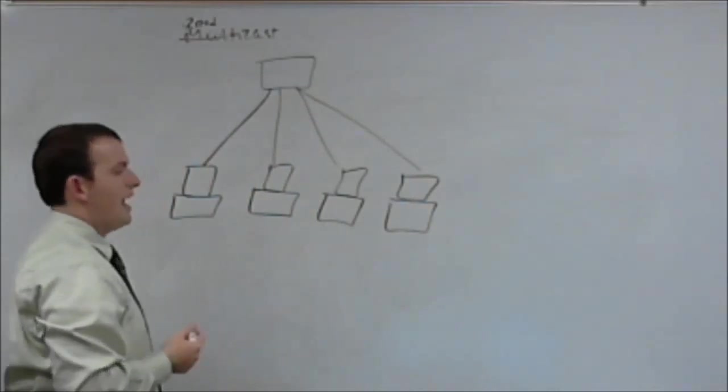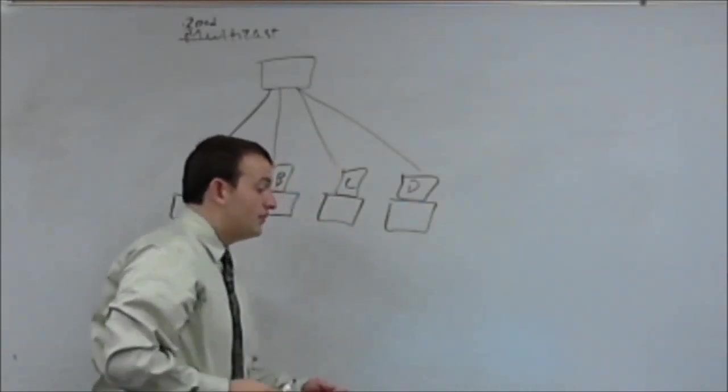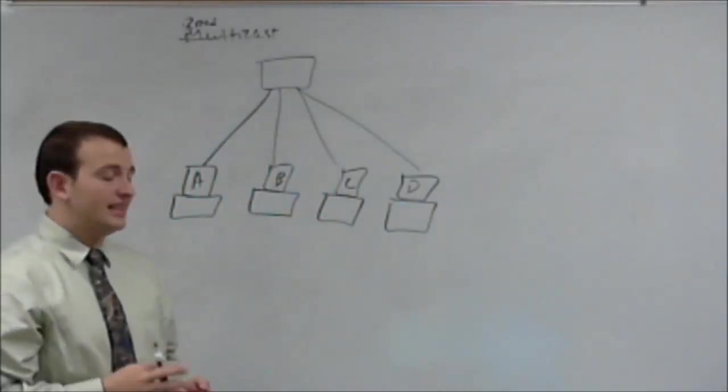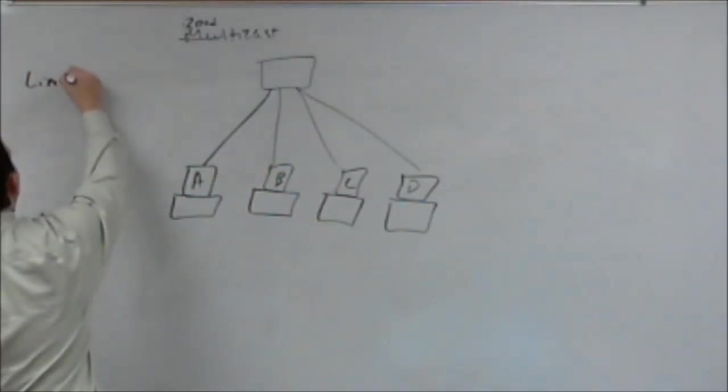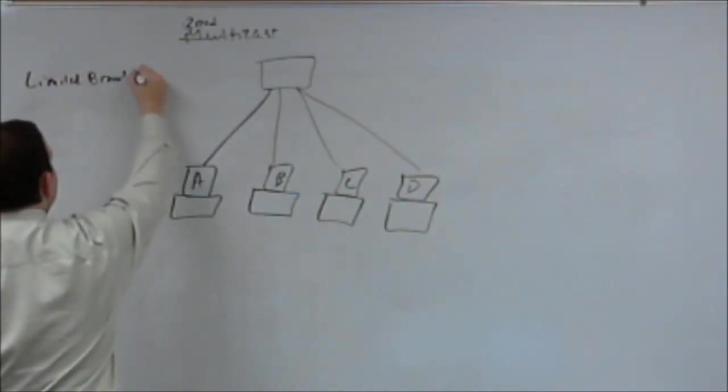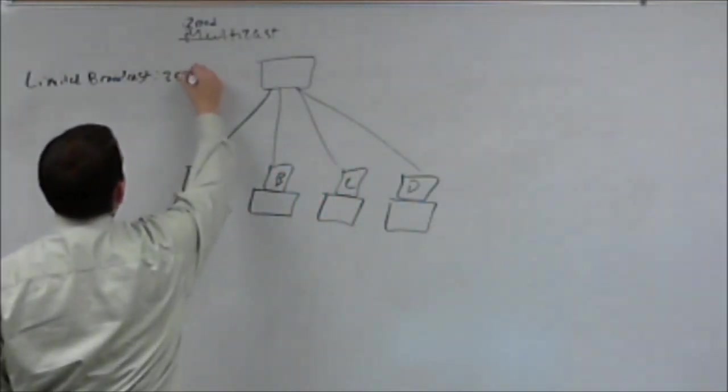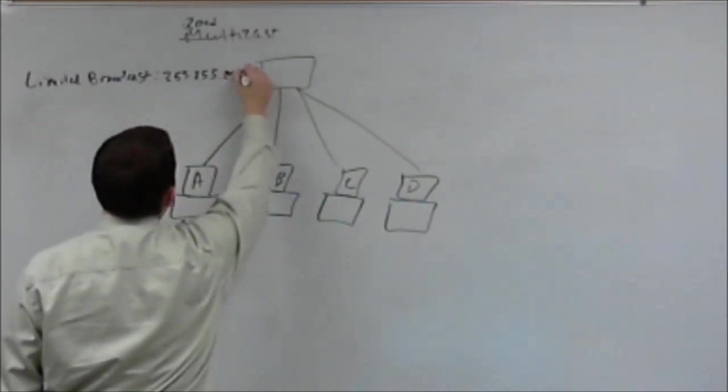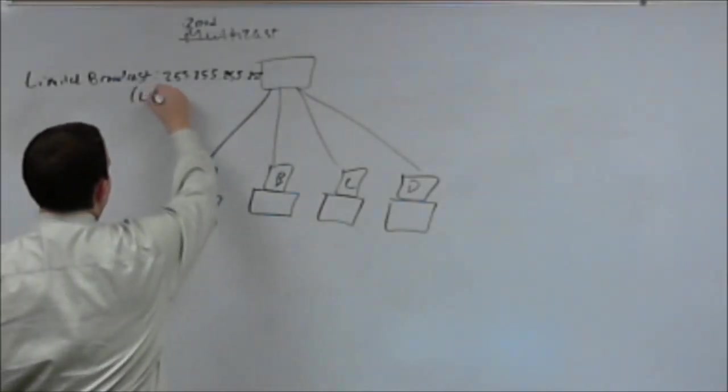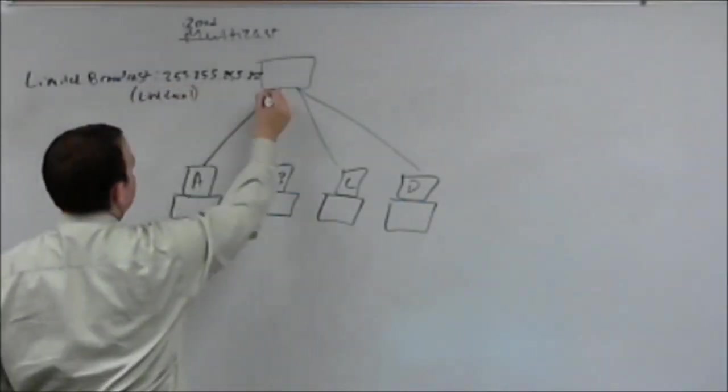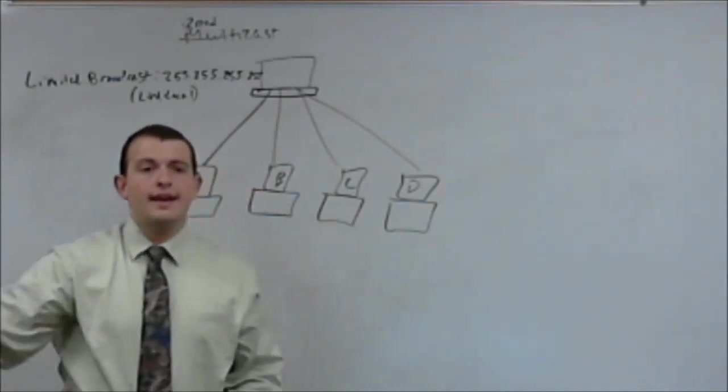And host A needs to get a packet to host B, host C, and host D. There are two ways it can do this. In a case like this, you would probably just use what's called a limited broadcast. The limited broadcast IP address is going to be 255.255.255.255. This is a link local broadcast.